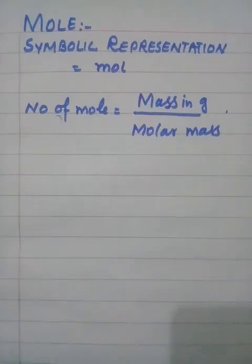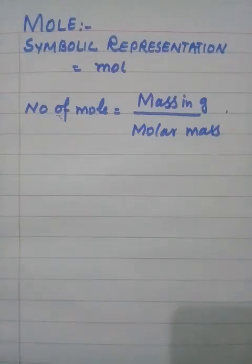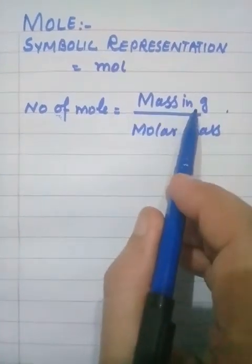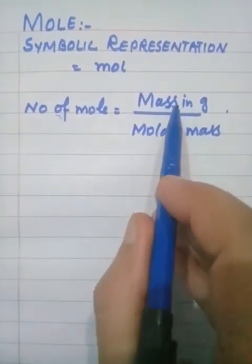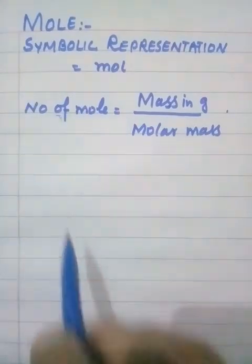When we say molar mass of water we mean 18g of water. 1 mole of water = 18g; 1 mole of aluminium = 27g. We can convert any mass into moles using: number of moles = mass in grams ÷ molar mass. Dividing the given mass by the molar mass gives us the number of moles.